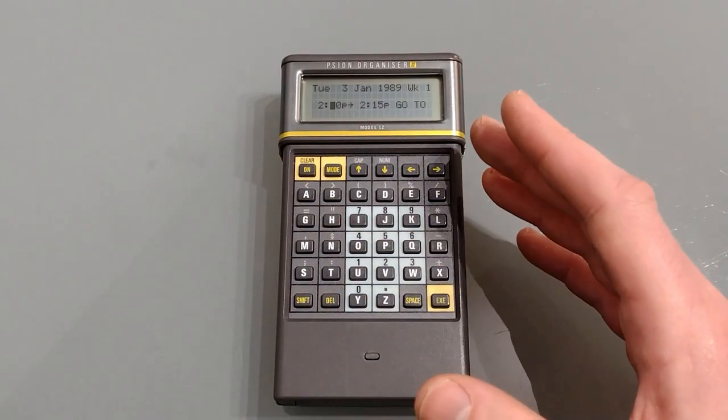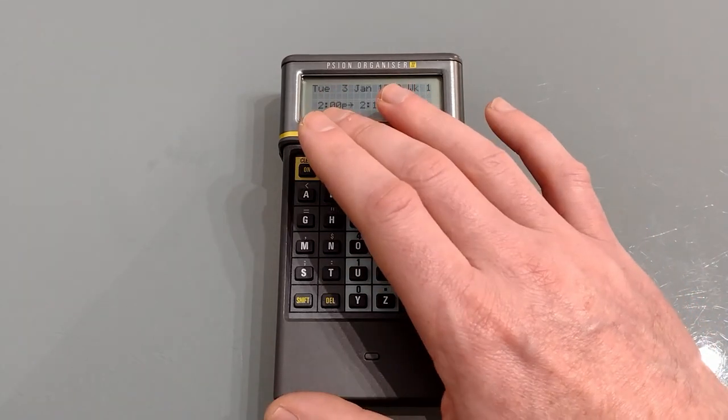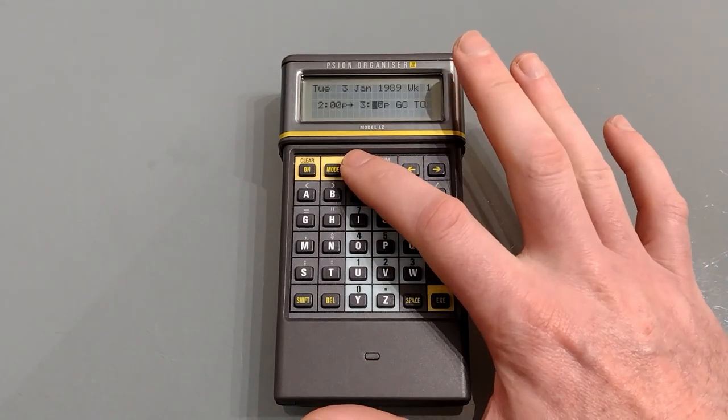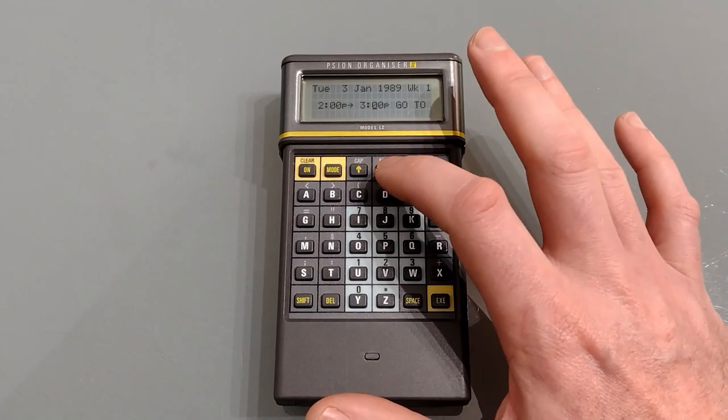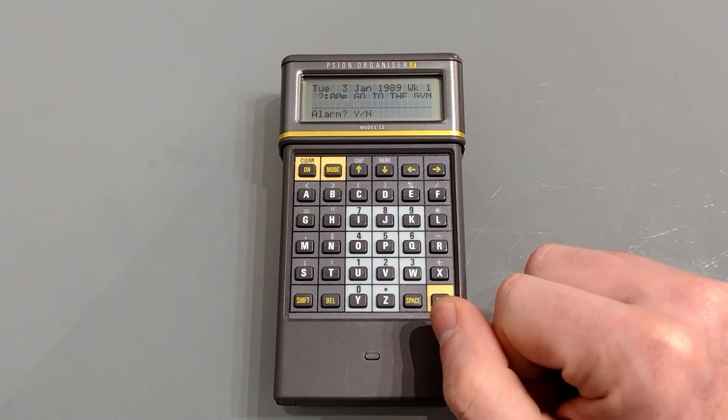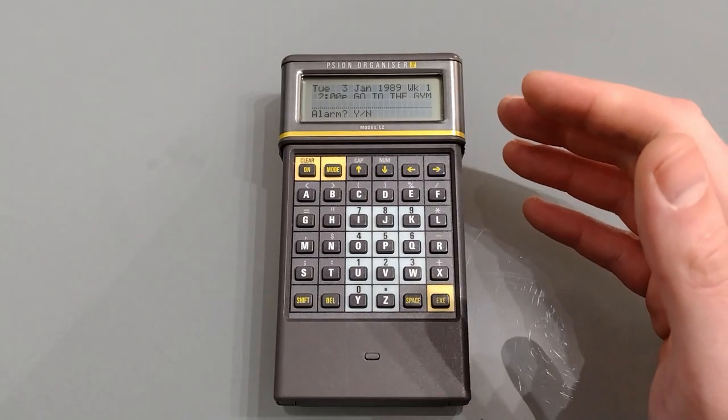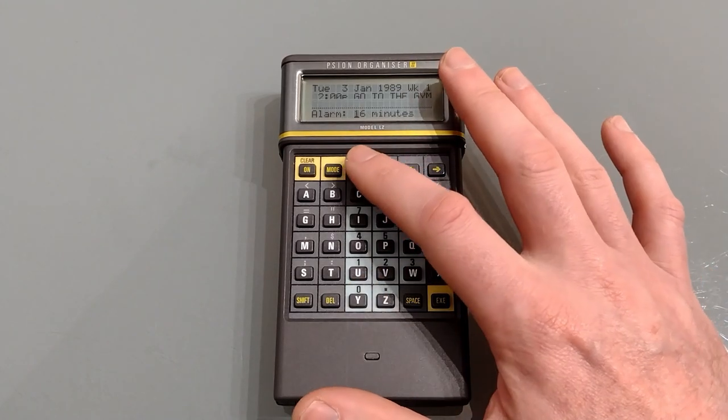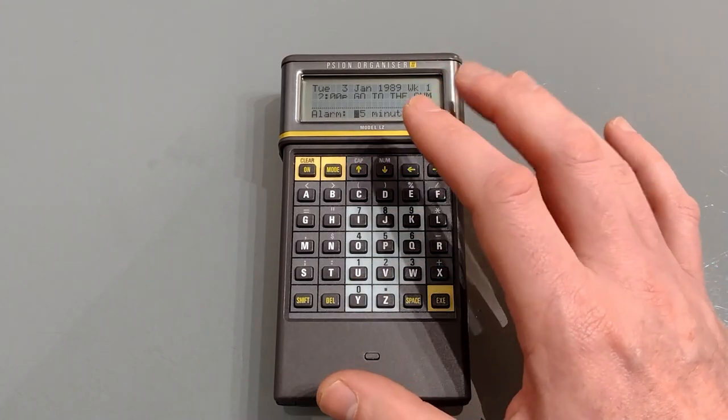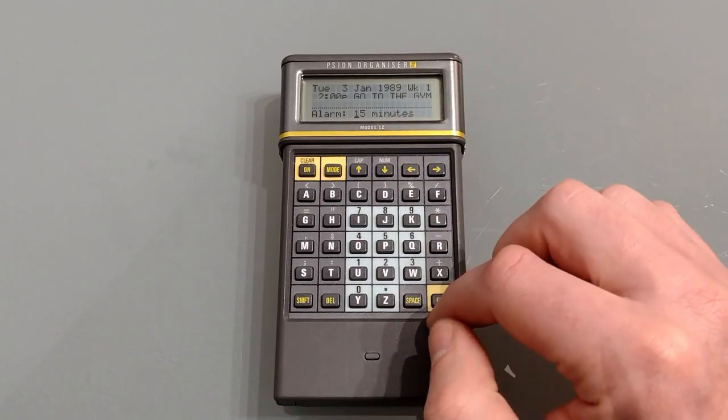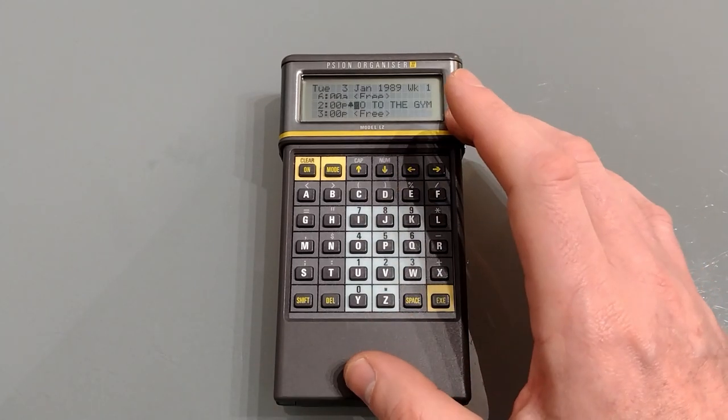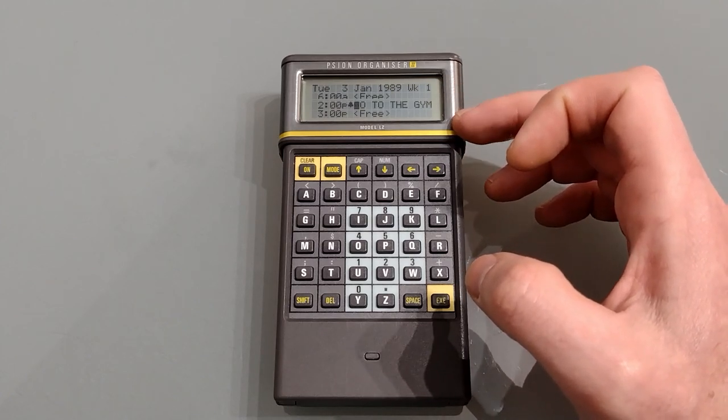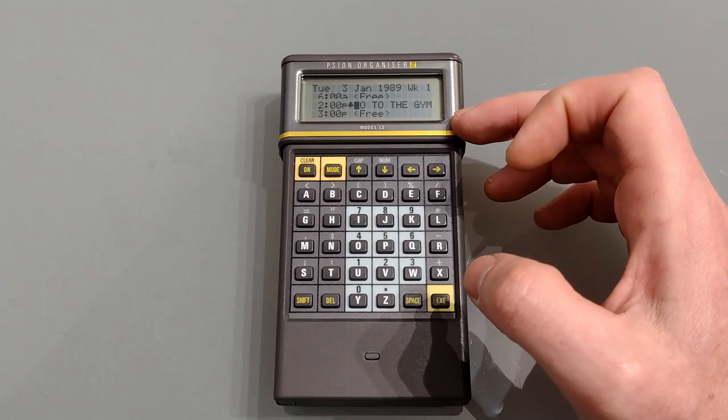Hitting enter will then allow you to select the time you want. It started at two o'clock because I went to the third of the four dashes. We then use the arrow keys to change the time. Let's just do an hour and now we have the option to add an alarm. If you press no it'll just save the item. If you press yes it brings up this alarm menu and you can use the arrow keys to change when the alarm goes off, up to 59 minutes before. Once that's done hitting enter shows us the day, so we can see the first block at six is free and then after the gym three o'clock onwards is free.